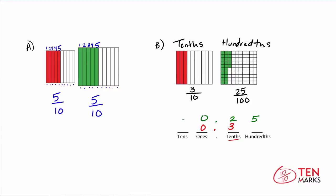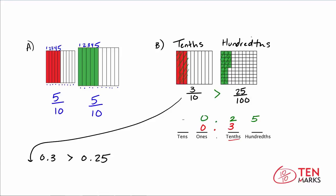Now you can see that 3 tenths is greater than 25 hundredths, and you can see this just on the visual alone. Because these are the same size whole, the red space is a greater amount of the whole than the green space is. So already you should be thinking that 3 tenths is greater than 25 hundredths. Writing this out as decimals, 0.3 is greater than 0.25. We did this with the help of the visual - we could just tell by the space alone which number was greater.